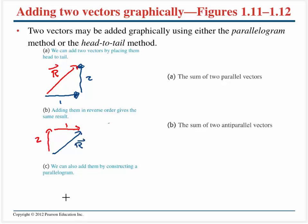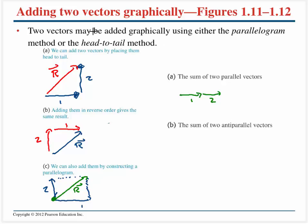We can also use the parallelogram method, where we take vector one and vector two, draw a parallelogram in our heads, and the resultant vector starts where they originate and goes to where that parallelogram intersects. If the vectors are parallel, the resultant simply continues in the same direction. If they are anti-parallel, it goes off at some different angle.